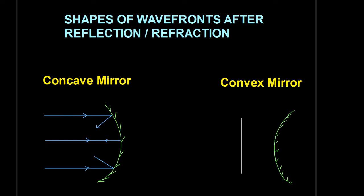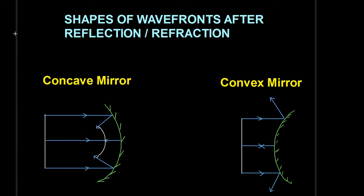If we draw the reflected wavefront for the concave mirror, it will be spherical and converging. In the case of a convex mirror, the waves are incident on the surface and are perpendicular to the plane incident wavefront. Since it is a diverging mirror, these waves diverge. The wave passing through the principal axis will not undergo any deviation and will be rebounding, so the shape of the reflected wavefront will be convex and diverging.